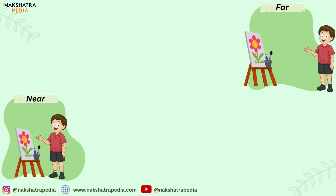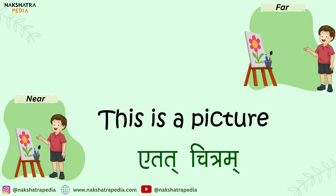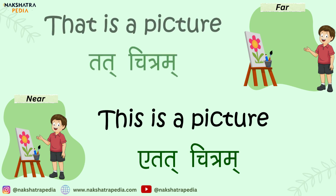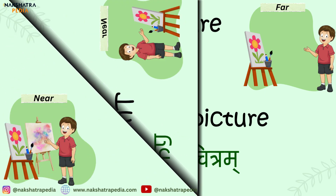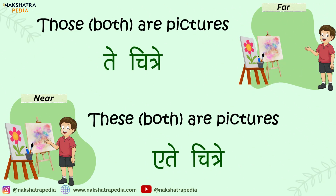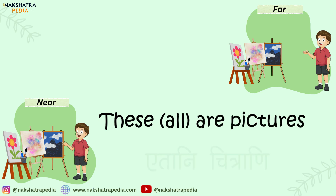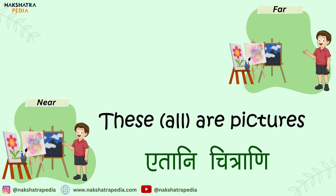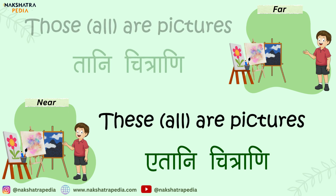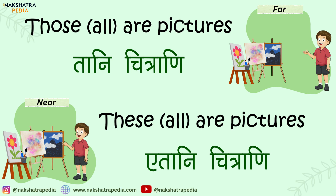Here are some more examples. 'This is a picture' is etat chitram if it is near, but if it is far then we say tat chitram. Ete chitre and te chitre for near and far in dual form. And if there are many pictures — that is the plural form — then it will be etani chitrani, and tani chitrani if the pictures are far.